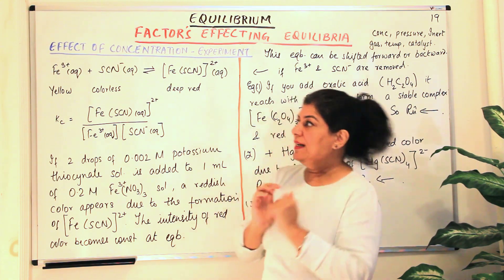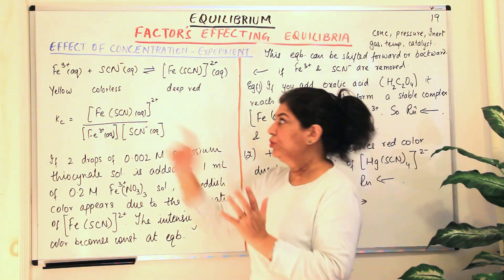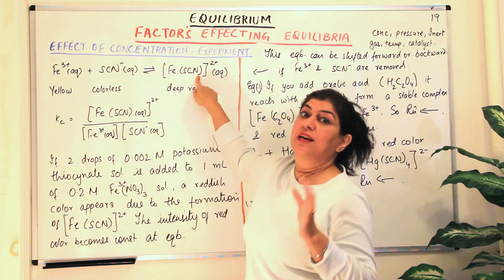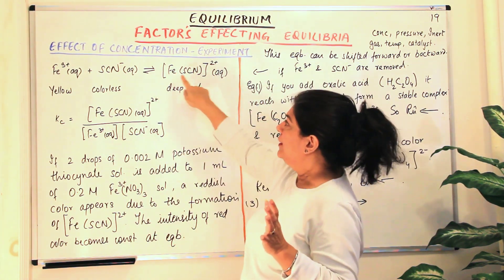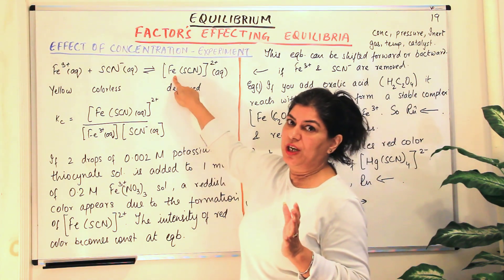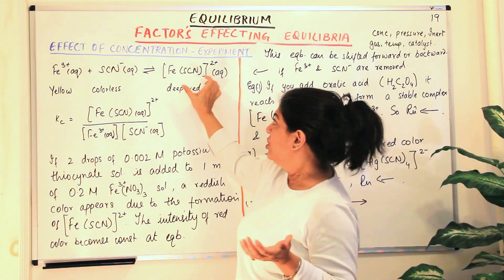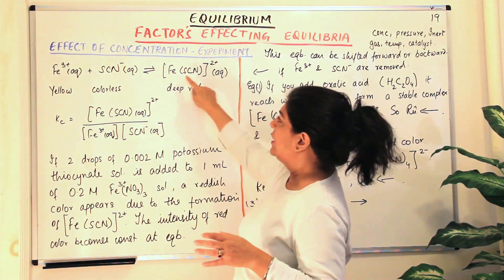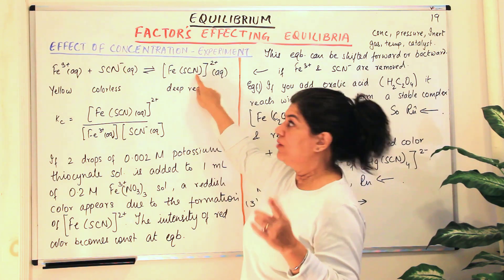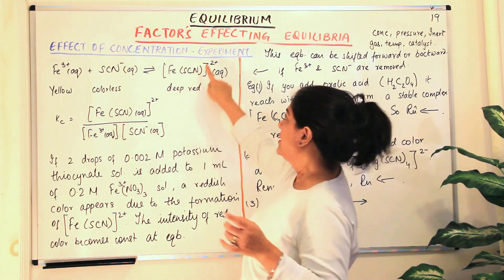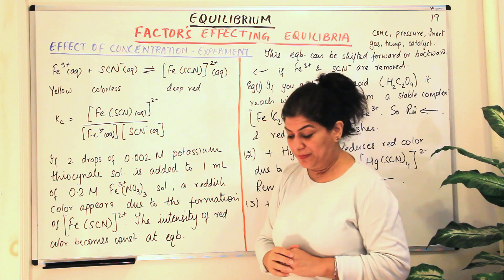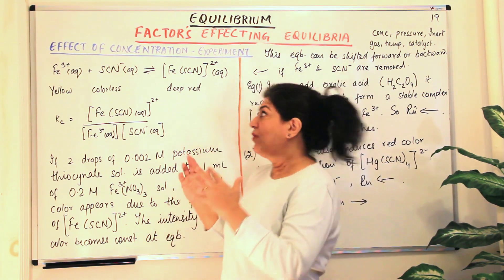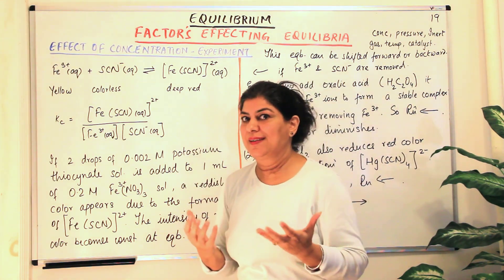When we mix these two, we observe that both ions react with each other and result in the formation of ferric thiocyanate, a complex ion. The ferric ion has a three positive charge and the thiocyanate ion has a one negative charge. So when they form a complex ion together, one positive and one negative cancel out, leaving two positive charges — therefore this ion has a charge of 2+. This colour change is why we use this example to understand the effect of concentration.